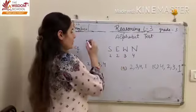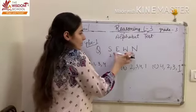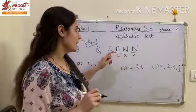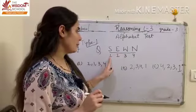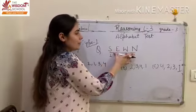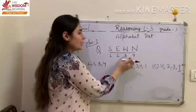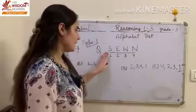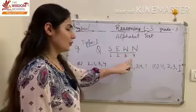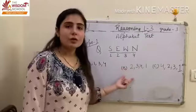So how you have to solve these type of questions? First of all, you will see that in question you will have a word given. This is the word given to you in the question. Now next, here numbering is also given to each letter of the word.